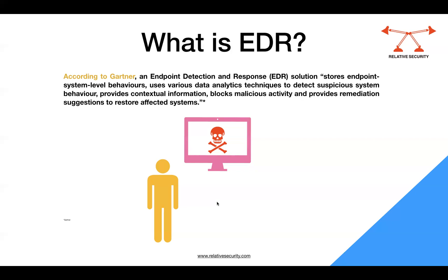In EDR it is not only detecting but also responding to that attack. In EPP there was no response other than stopping the binary from executing. With EDR you have much more data — it uses different data analytics techniques and provides contextual information because EDR is not only collecting binary executions on your endpoints, it is also collecting network connections, file changes, registry changes along with process executions. It has improved machine learning and algorithms to detect incidents based on its own datasets and rules.